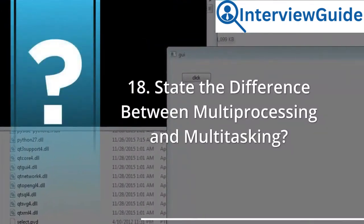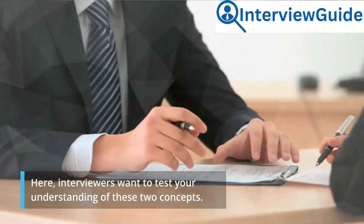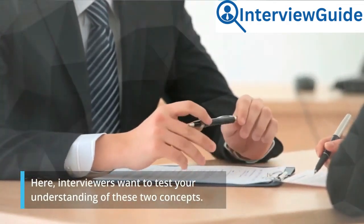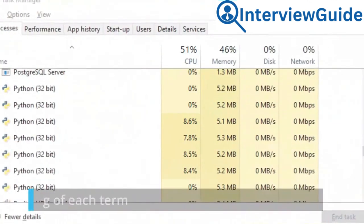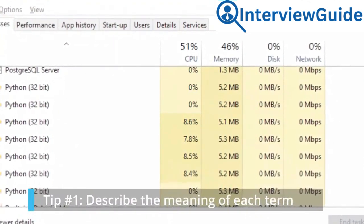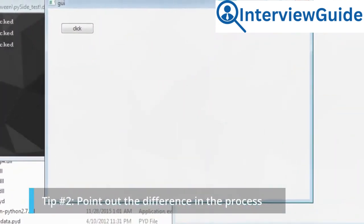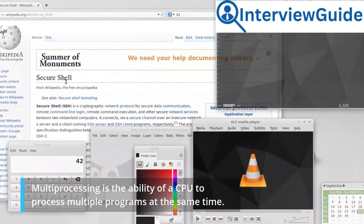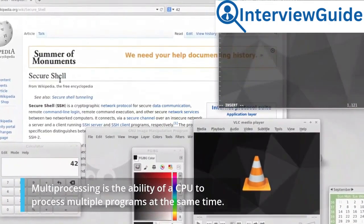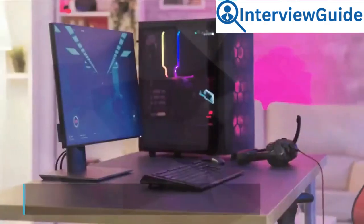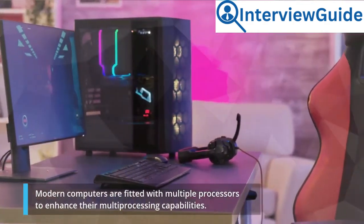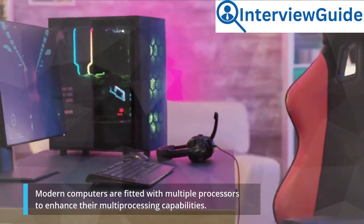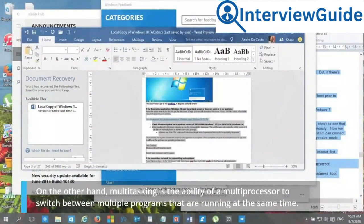Question 18: State the difference between multiprocessing and multitasking. Here, interviewers want to test your understanding of these two concepts. Tip number 1: describe the meaning of each term. Tip number 2: point out the difference in the process. Sample answer: Multiprocessing is the ability of a CPU to process multiple programs at the same time. Modern computers are fitted with multiple processors to enhance their multiprocessing capabilities. On the other hand, multitasking is the ability of a multiprocessor to switch between multiple programs that are running at the same time.